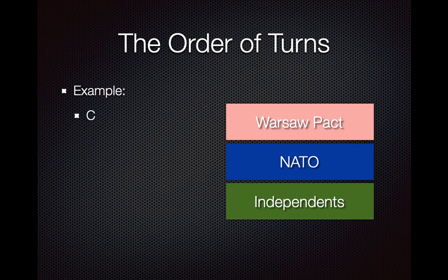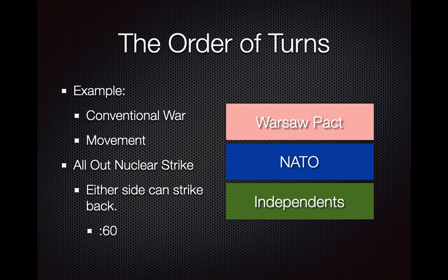The order of turns: the Warsaw Pact goes first. First is conventional war, then movement — like other simulations, that's when you can move things you didn't use during war. Then an all-out nuclear strike. Either side can strike back, and there are 60 seconds to process and hit their targets. One side can launch nuclear weapons, and the other side does not have to wait for their turn to launch — that's an important thing to keep in mind.